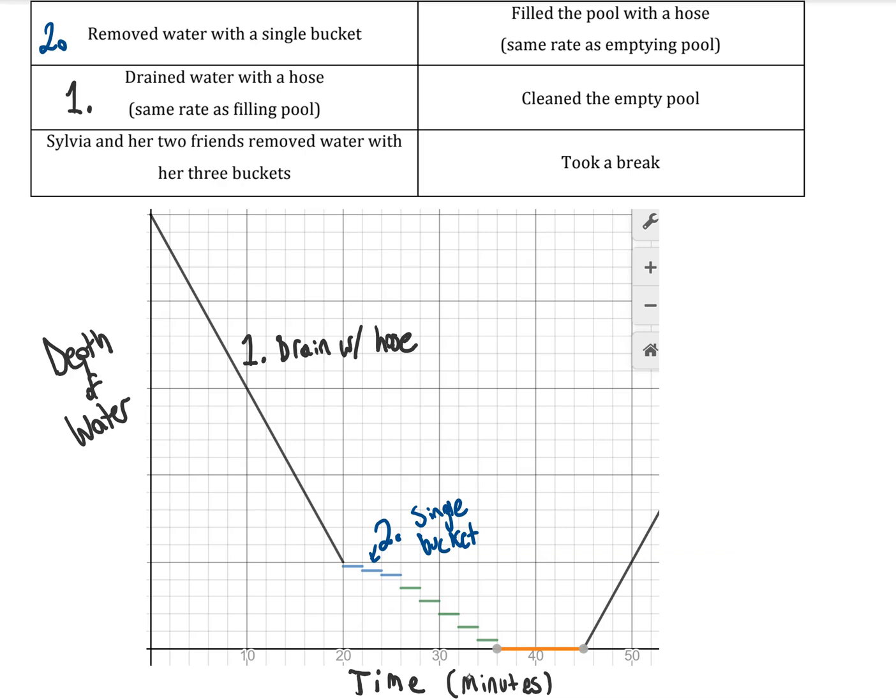But one key idea is when we get to step three, part three of my graph, that's the three buckets. Notice one way I can tell that this is three buckets is because the gap between these steps, this gap here, is much bigger than the gap between the steps in step two. So it's important that whenever you place these, that your gap when they were using three buckets is larger, around three times as big as the gap when Sylvia was doing it by herself. And I chose that she was doing it by herself first, because I imagined that she got frustrated, so then she went and got two of her buddies to help her out.